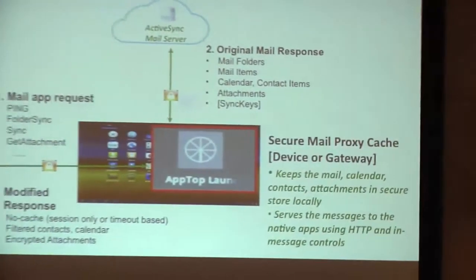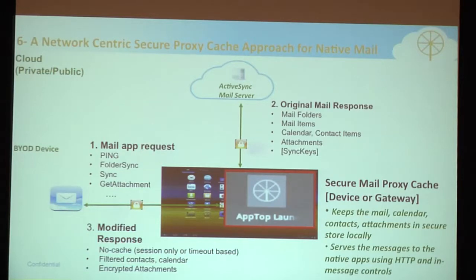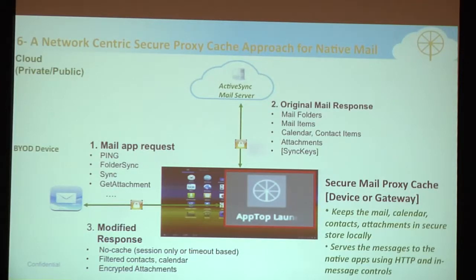Here's what we've done with native email. Taking the native email app on the iOS device and the ActiveSync server — running in your data center or connecting to a service like Office 365 — we built a secure proxy cache technology that sits in the middle. That proxy cache can run on the network external to the device, or you can run it on the device itself as a local cache. At a concept level, the secure cache watches all the mail, calendar, and contacts flowing through the proxy between the mail app and the server, and makes smart decisions.